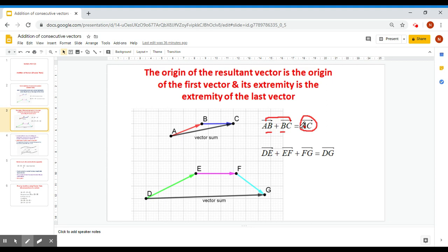In the second example, DE plus EF plus FG, the origin of the first is D. The extremity of the last is G. So the resulting vector is DG.